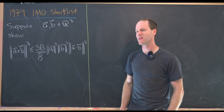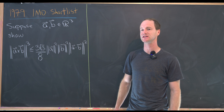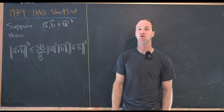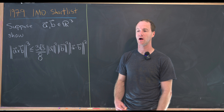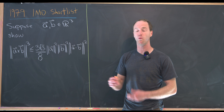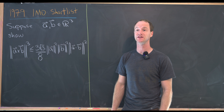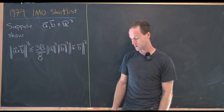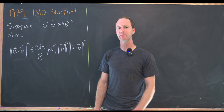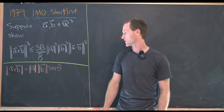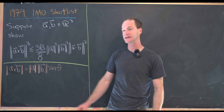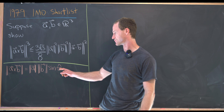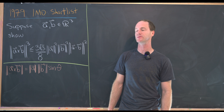There are some things built into this problem that give us some hints. Since we've got a magnitude of a cross product, we probably want the well-known formula for the magnitude of the cross product in terms of the angle between these vectors — that is, magnitude A times magnitude B times sine of the angle between them.